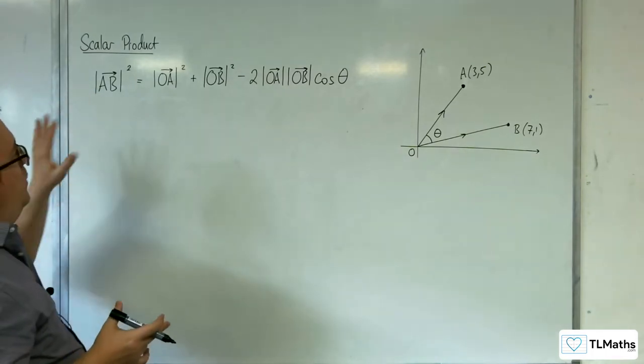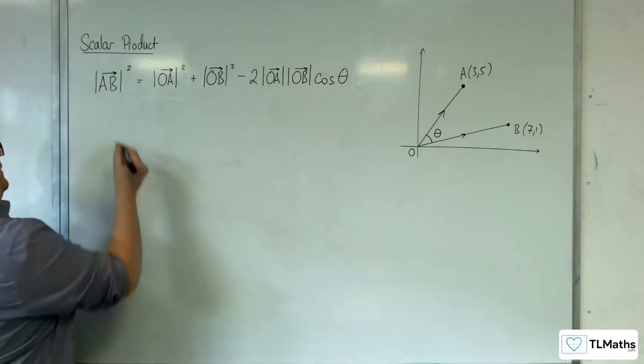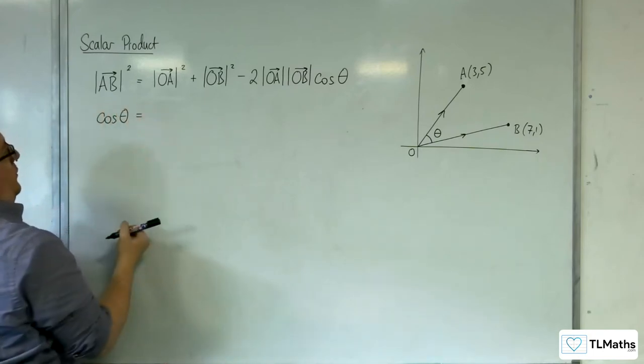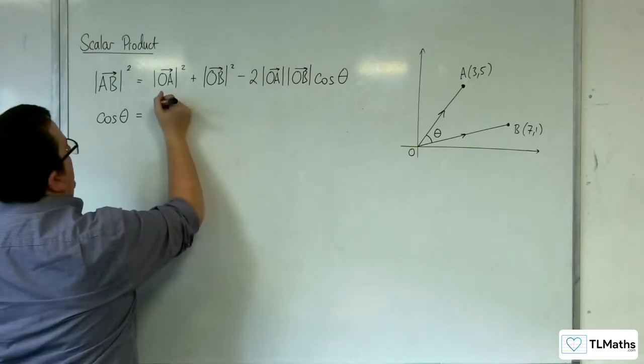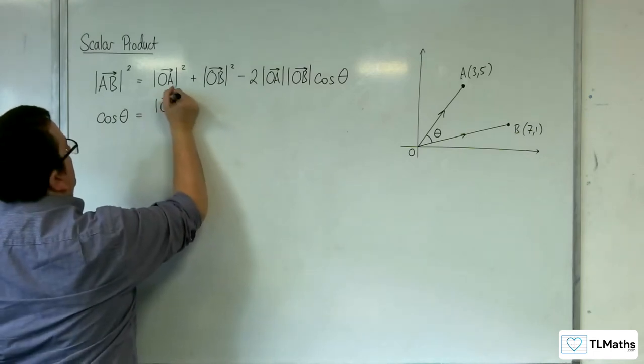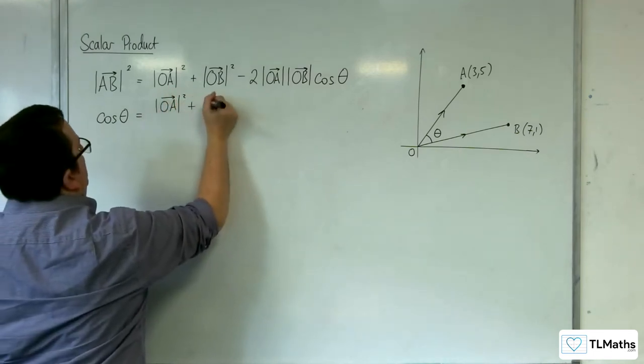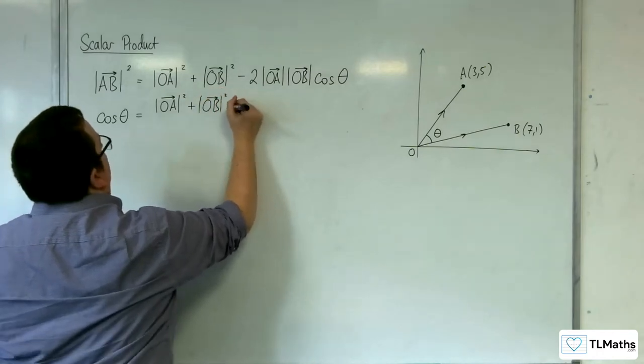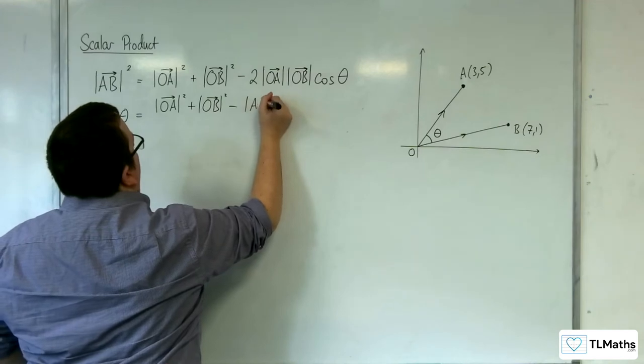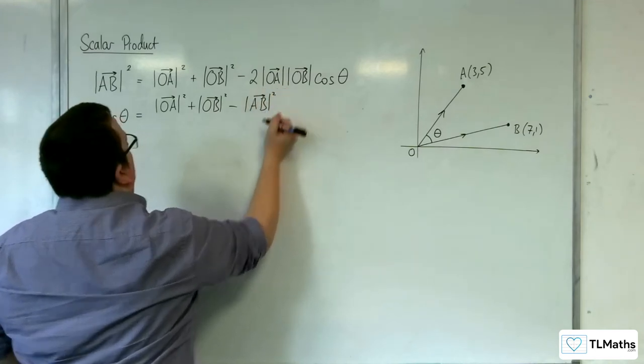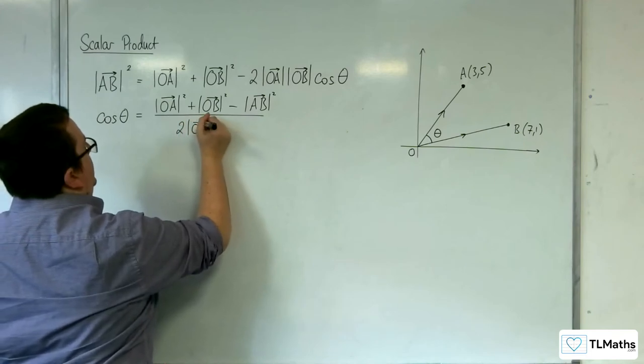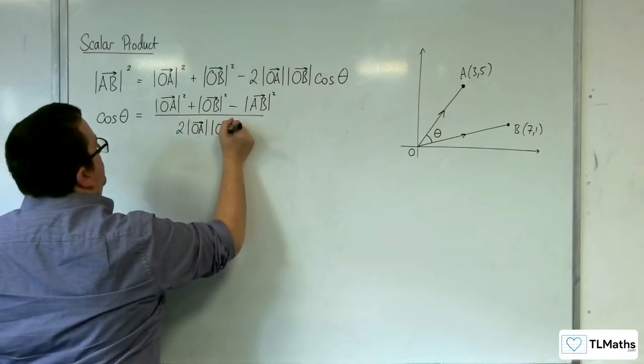So we can rearrange that to get cosine theta equals, and we would have OA squared plus OB squared take away AB squared over two OA OB.